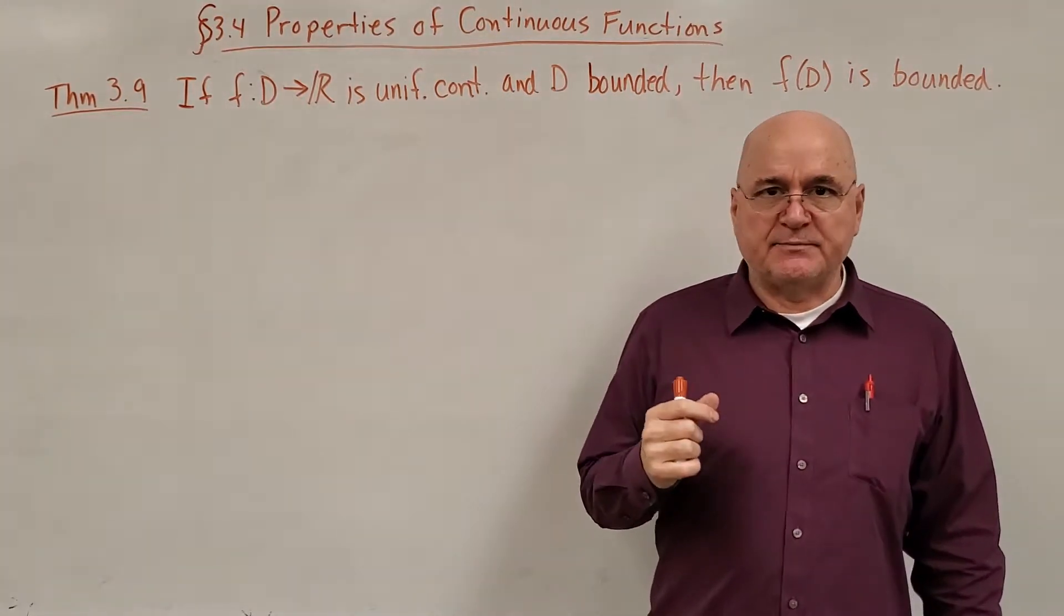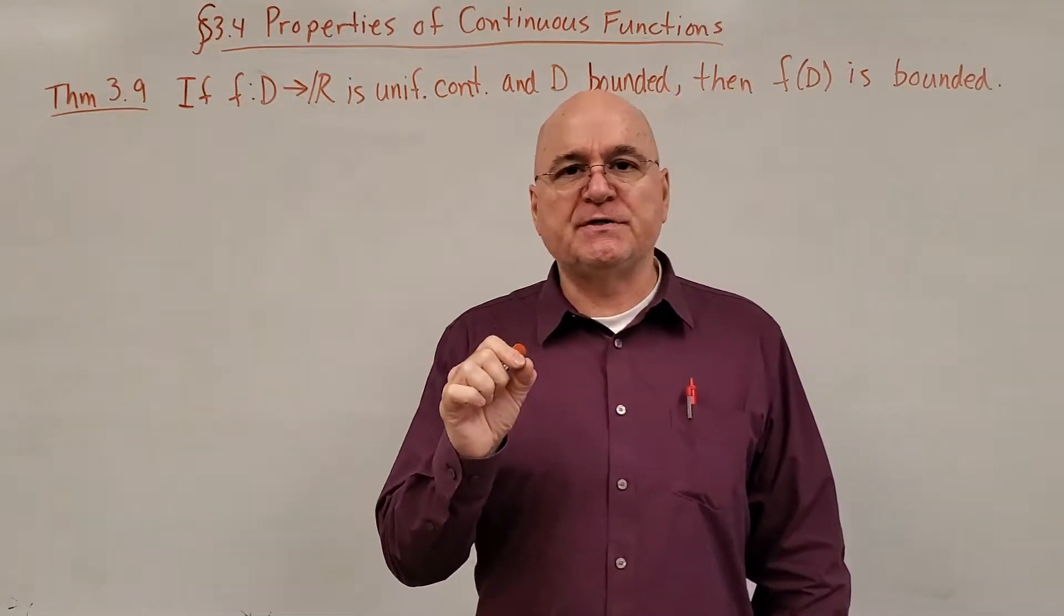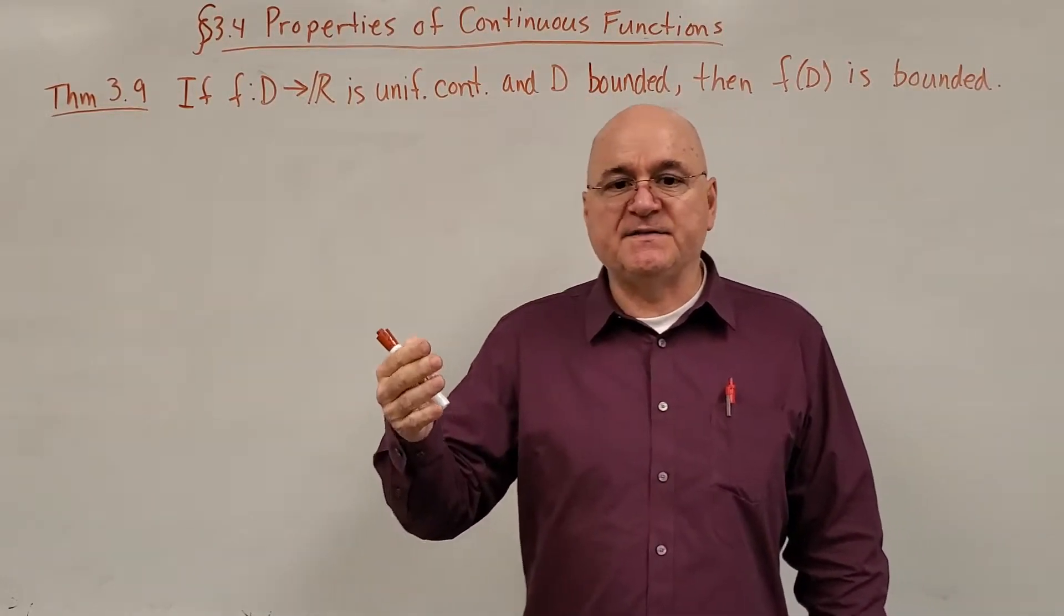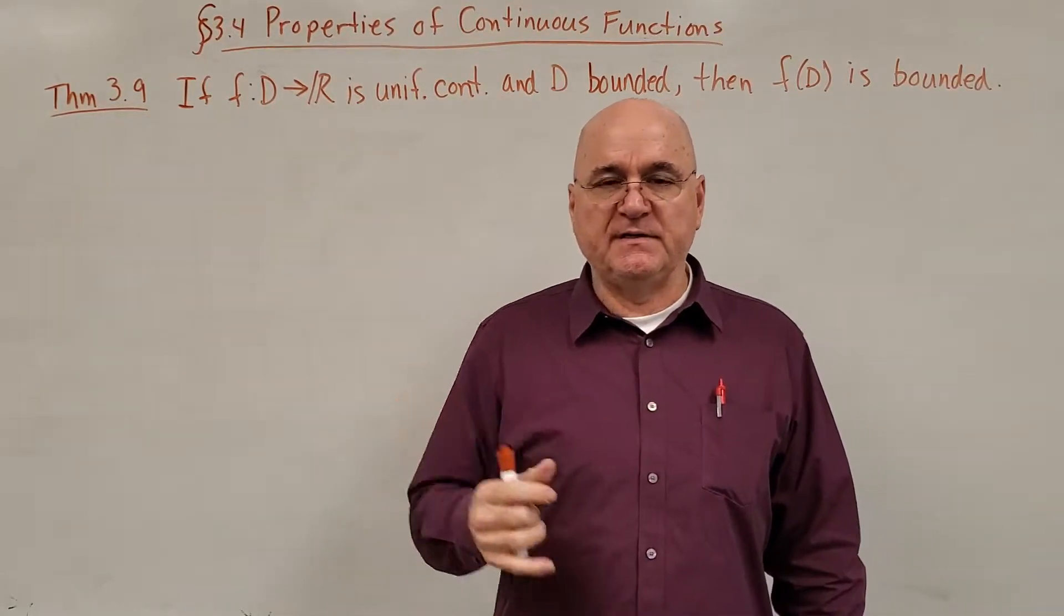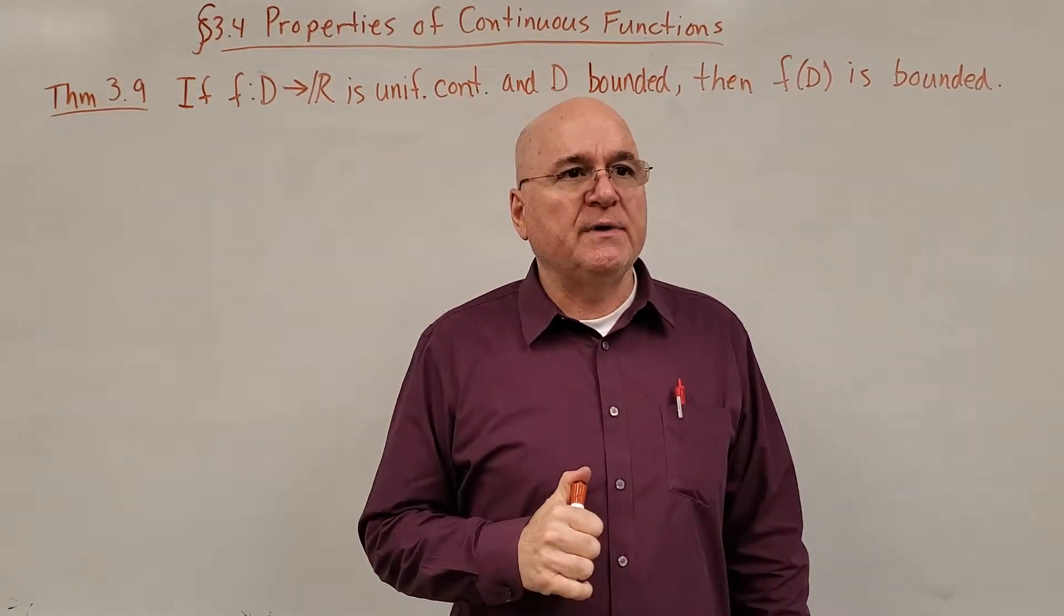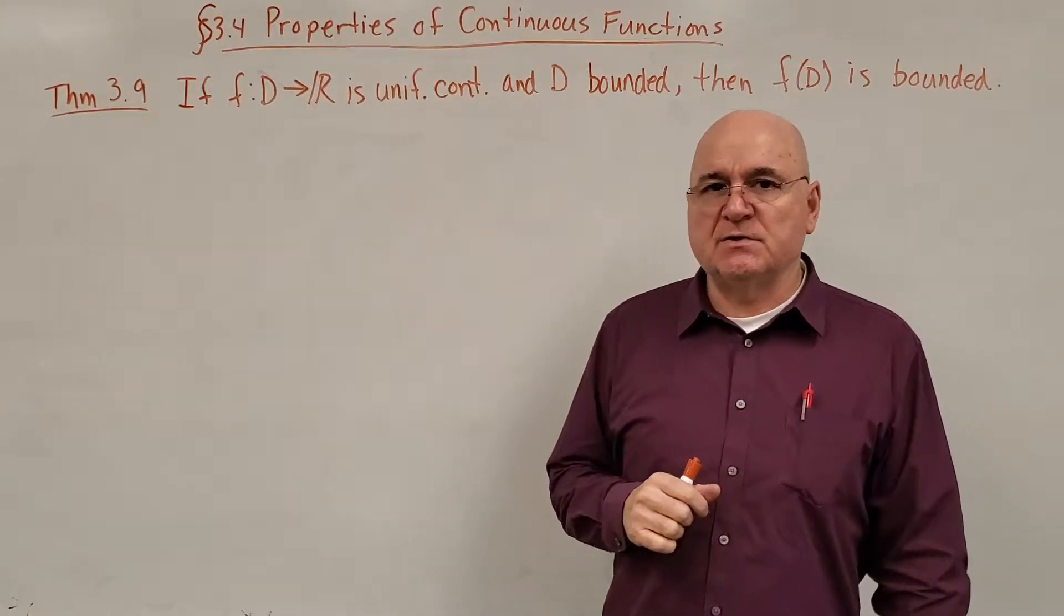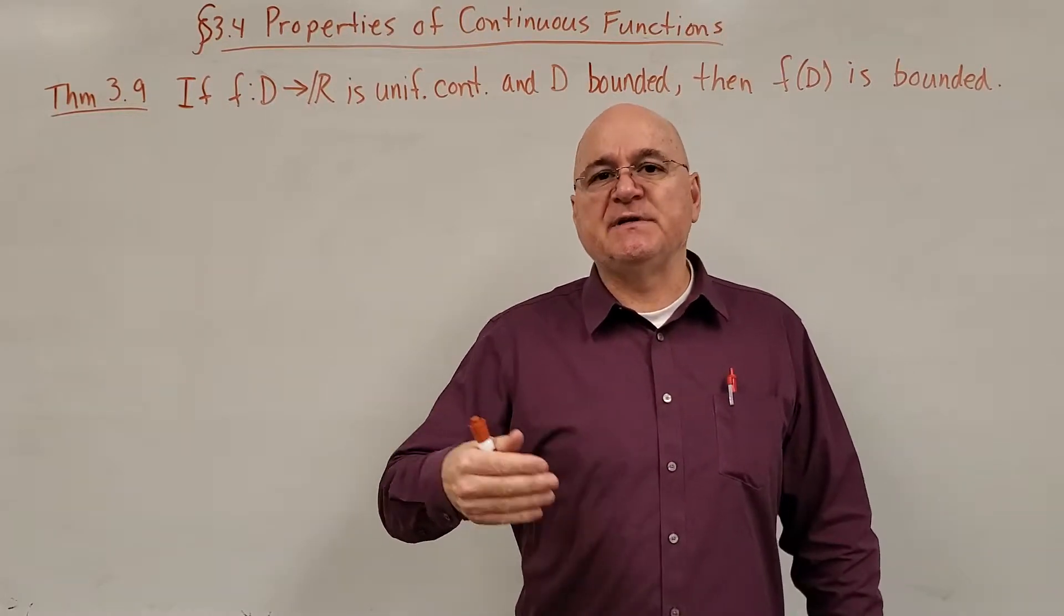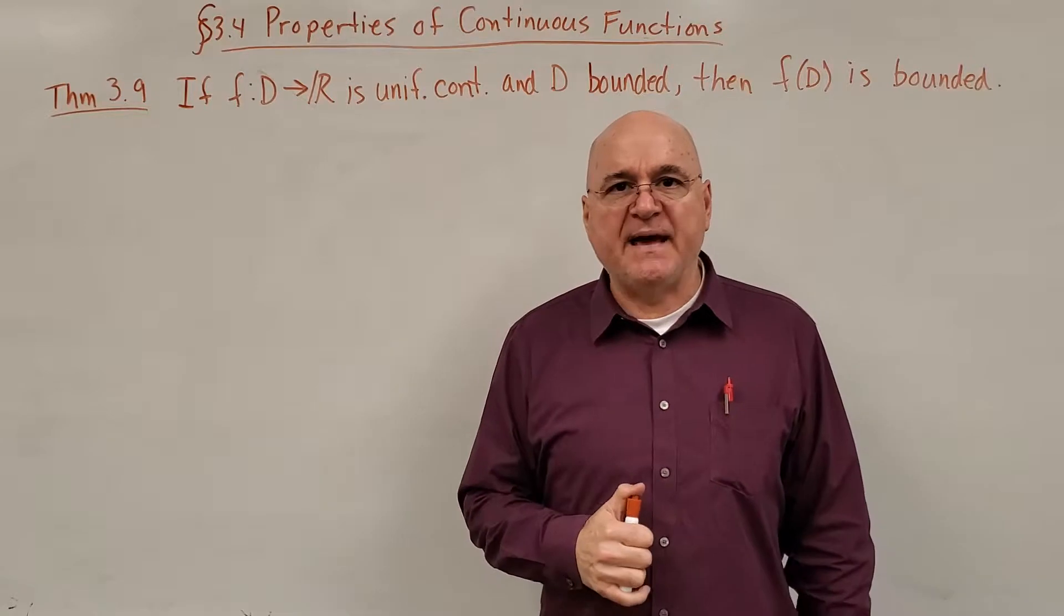To review what we've talked about in Chapter 3 so far, we talked about what it means for a function to be continuous at a point, and then we defined a continuous function to be a function that is continuous at every point in its domain. We talked about the algebra of continuous functions, uniformly continuous functions, and we defined some terms like closed set, open set, and compact set.